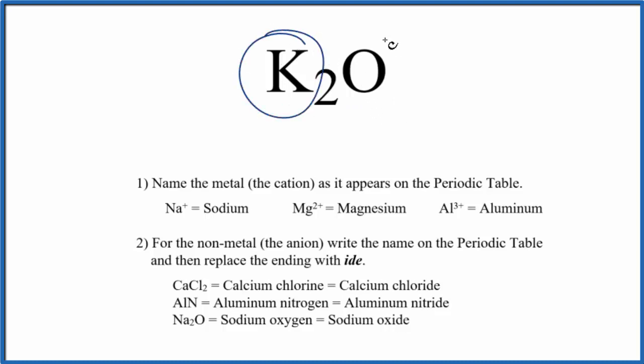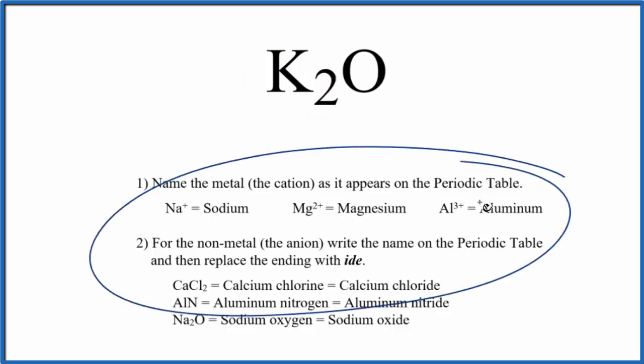Specifically, we have potassium and oxygen, just two different elements. So this is called a binary ionic compound, and we can use these rules to write the name.